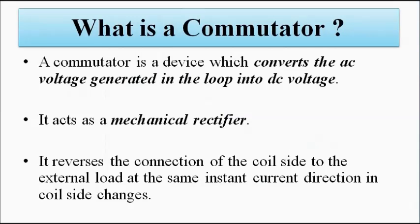A commutator is a device that converts the AC voltage generated in the loop into DC voltage. We can call it a mechanical rectifier — because it is a mechanical component that converts AC to DC.